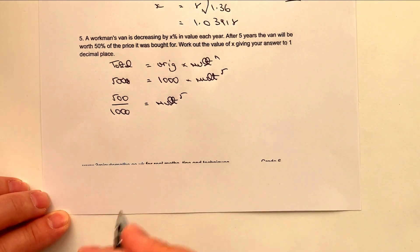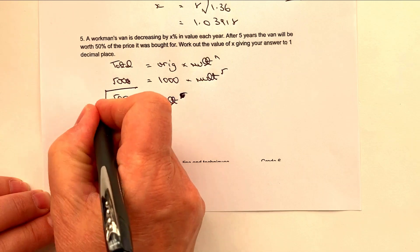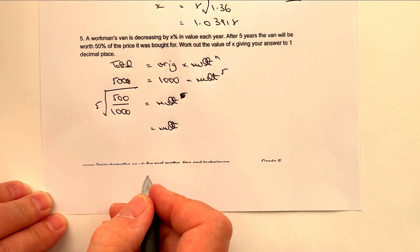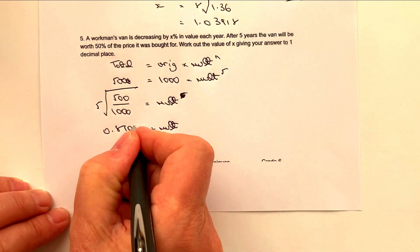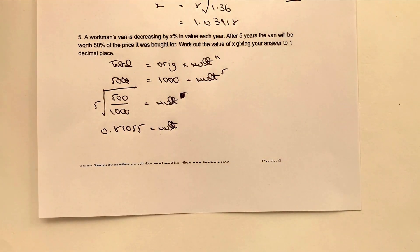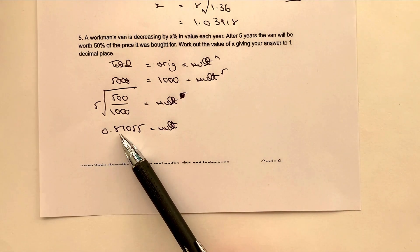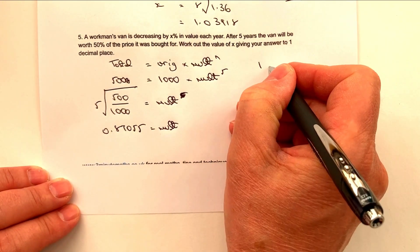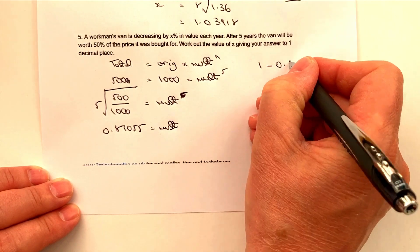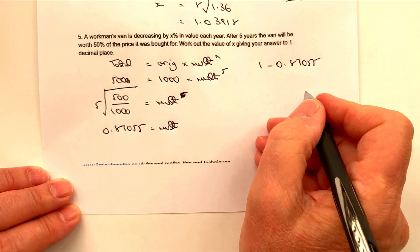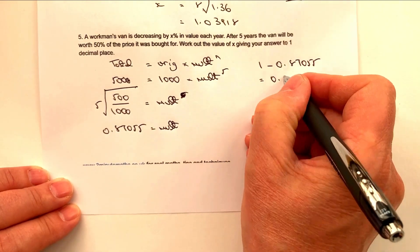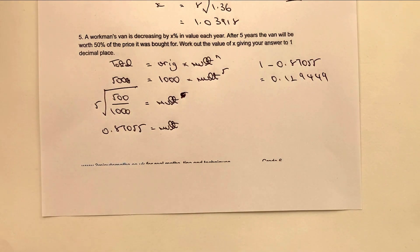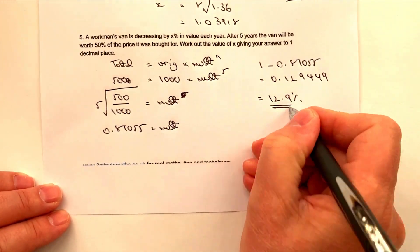I don't want the fifth root. I actually want the root of the value itself. So that's five and that's going to equal the multiplier. So if I pop that into a calculator, what I actually get is going to be 0.87055. So in other words, what we're saying is that the value each year is 87 percent of the value of the previous year. Now, if you like, I start with one and therefore it's now 87 percent. So that's going to give me a reduction of 0.129449, which is the decimal equivalent of a reduction of 12.9 percent per year.